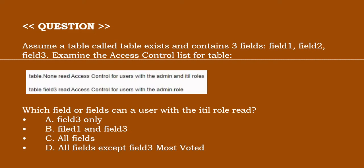Option A: field3 only. Option B: field1 and field3. Option C: all fields. Option D: all fields except field3, most voted. The correct answer is option B.